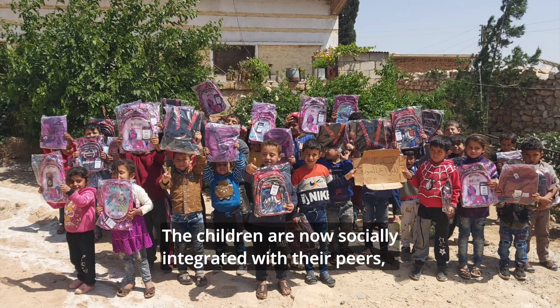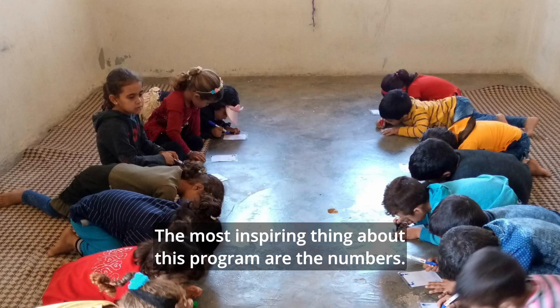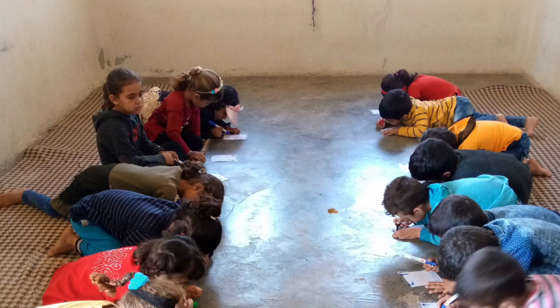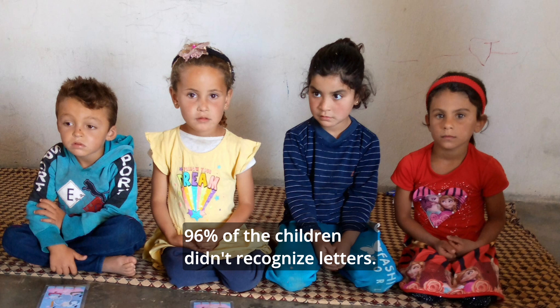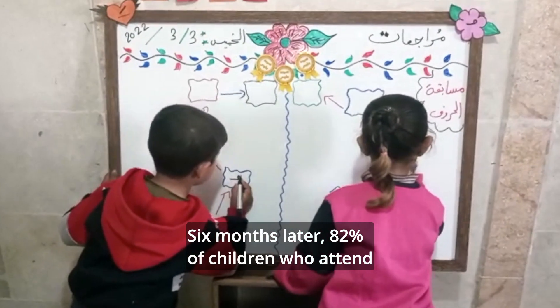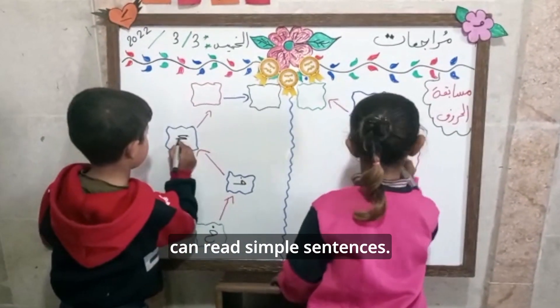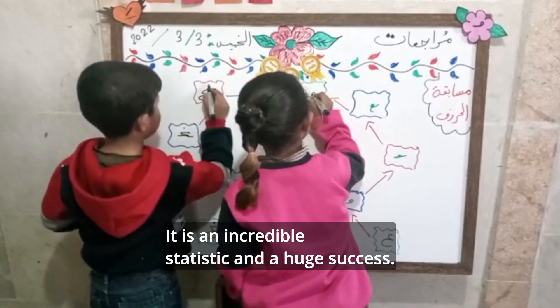The children are now socially integrated with their peers, spending time with other children and learning together. The most inspiring thing about this program are the numbers. When we started the project, 96% of the children didn't recognize letters. Six months later, 82% of children who are at age 10 can read simple sentences. It is an incredible statistic and a huge success.